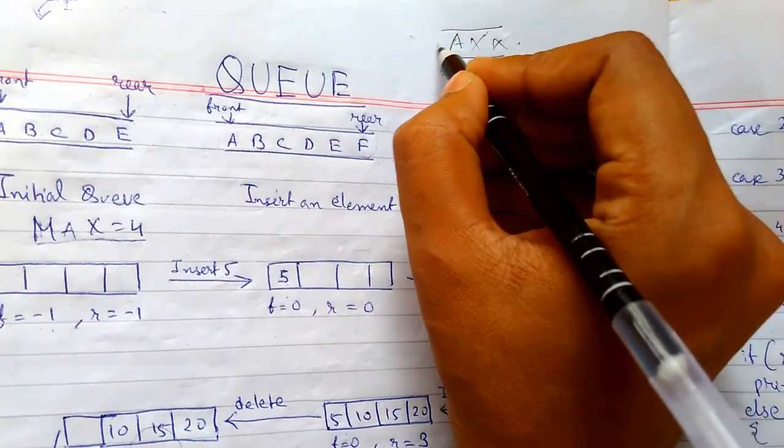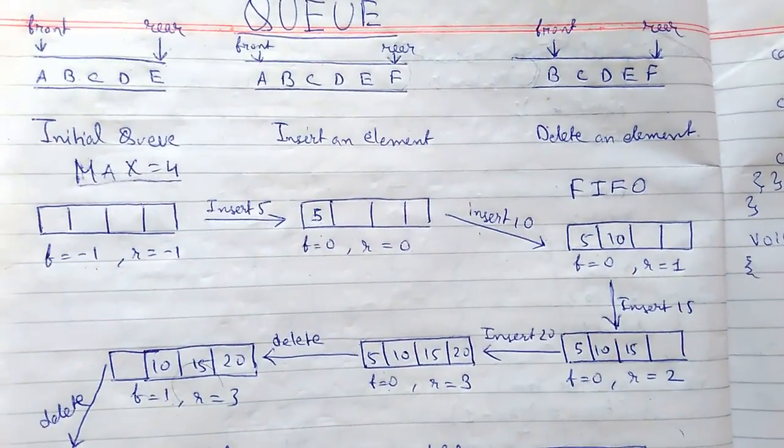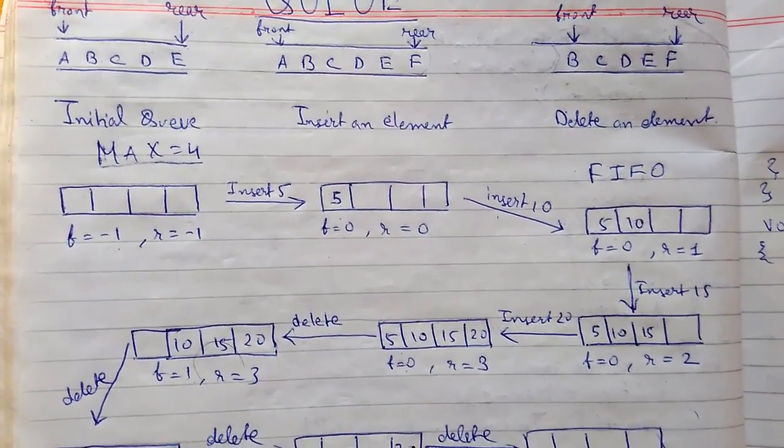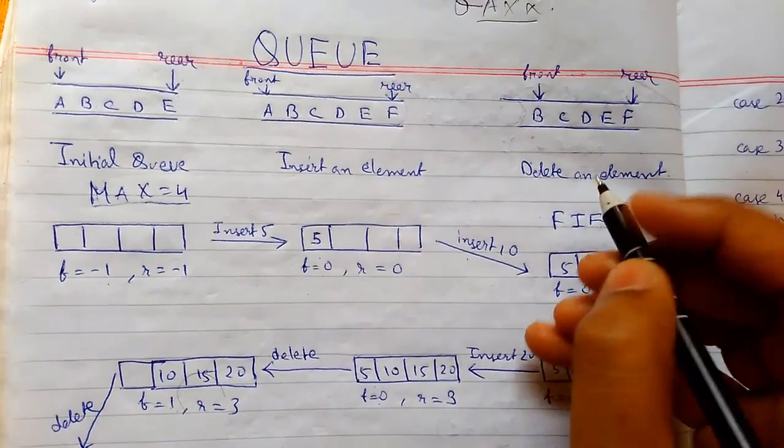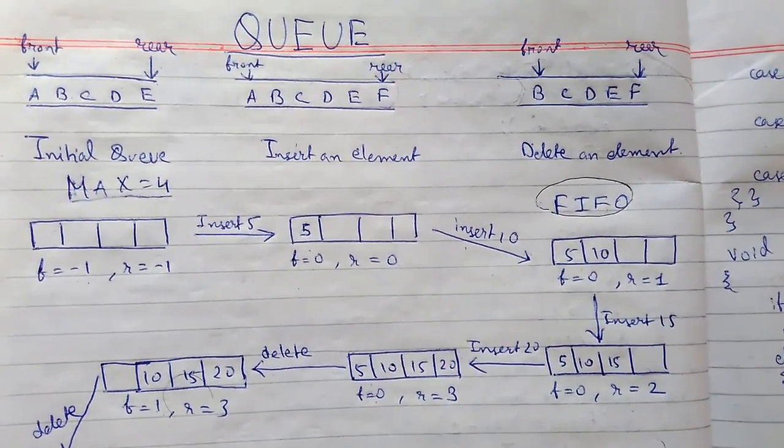Suppose there are other cars. From this end it will be the first to leave. This property or behavior of Queue is known as first in first out. That is also called FIFO, first in first out.